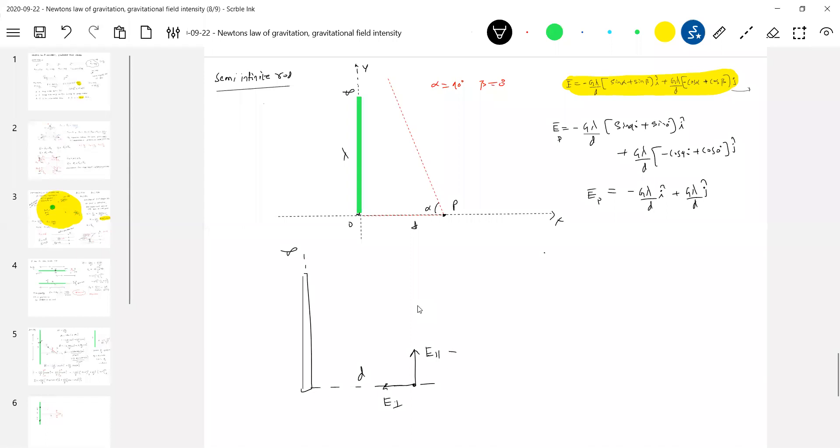So the parallel component should be equal to g lambda d. For numericals, we need to think this way rather than i cap j cap, because the orientation of the rod can change.